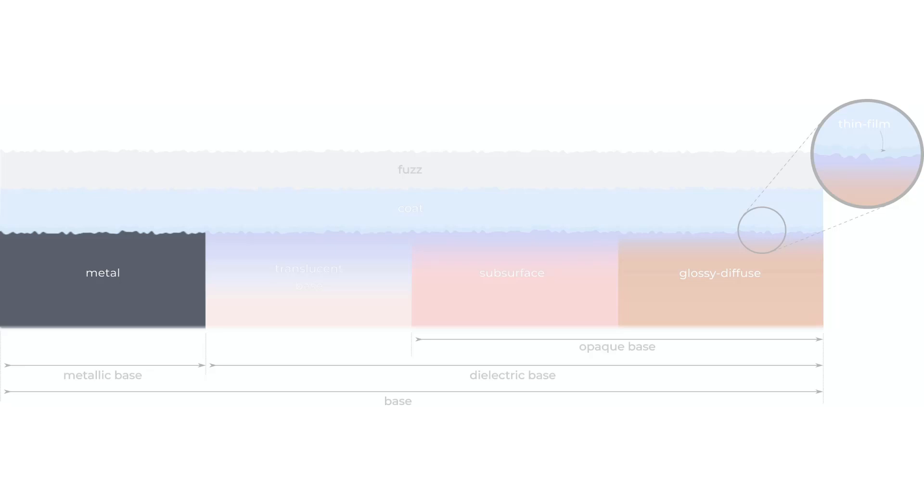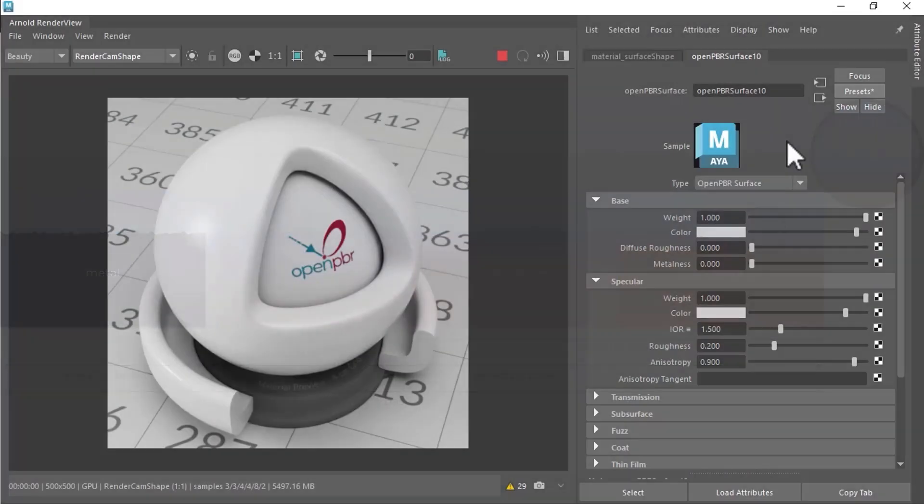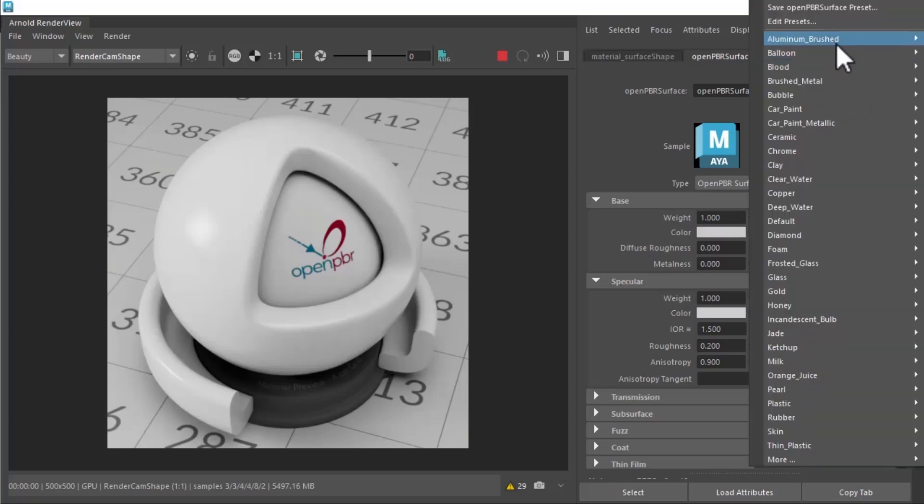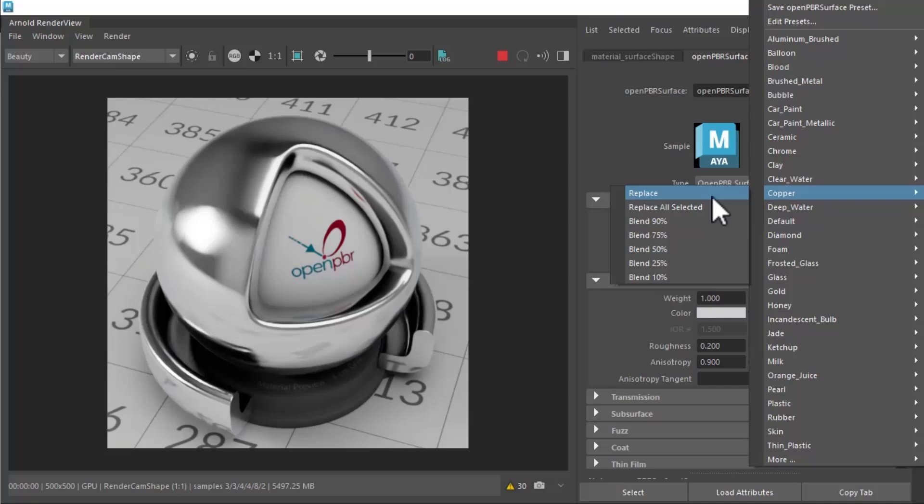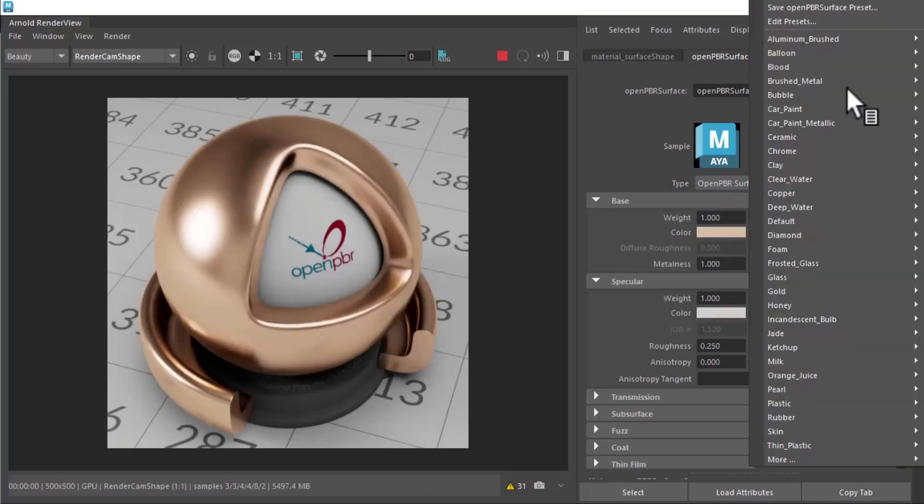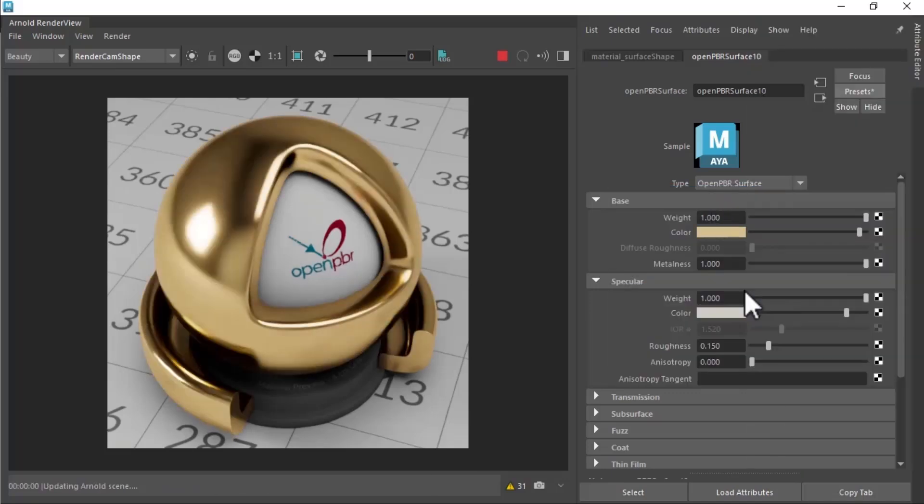First, when base metalness is 1, the surface is purely metallic. In this case, the base color controls the observed color of the metal seen straight on. This is often referred to as F0, meaning the Fresnel reflectance when viewed straight on. For example, the F0 color is yellowish for gold or gray for chromium.